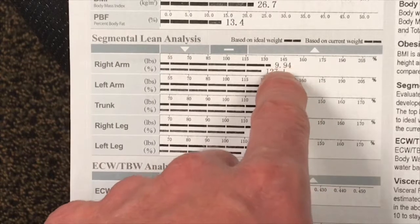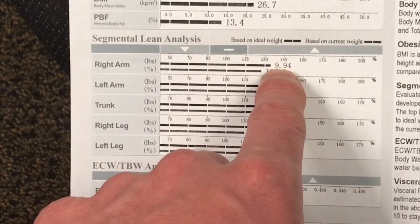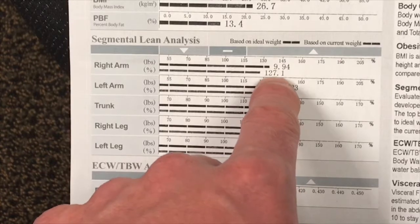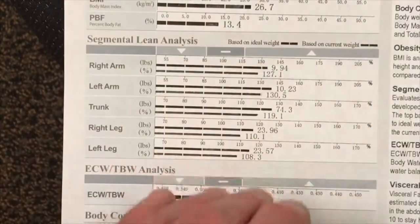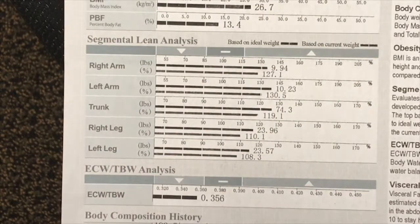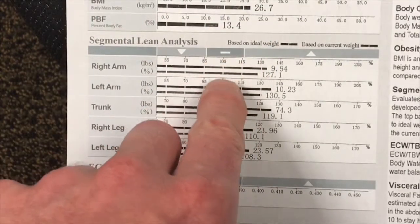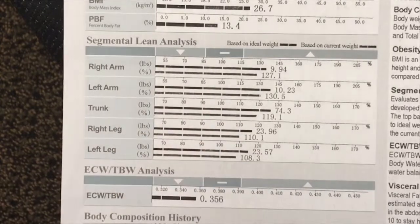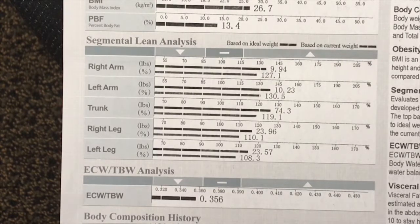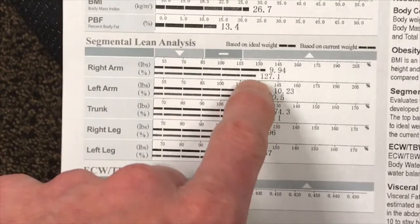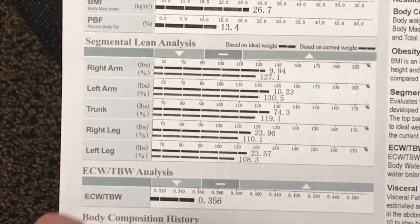The top number is a poundage value — this is how many fat-free pounds you have in your right arm. The 127 number is a percentage, and 100% is going to be the average when it's talking about muscle. So we can see this person is 27.1% higher in their right arm lean mass than somebody else like them who weighs the same, has the same height, and the same gender.